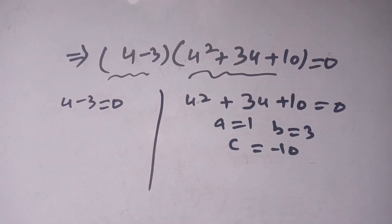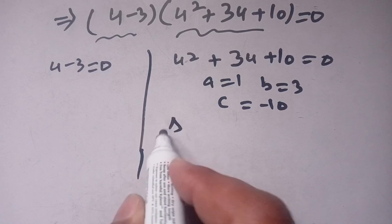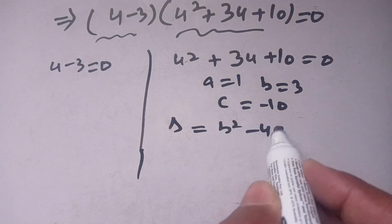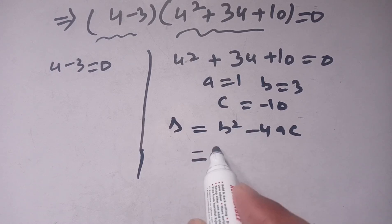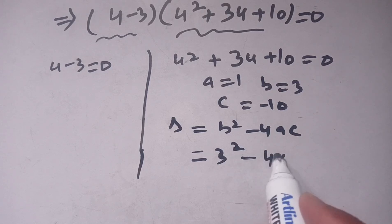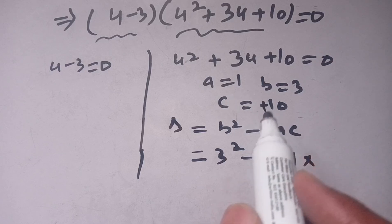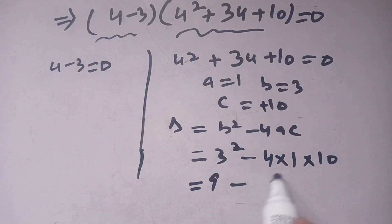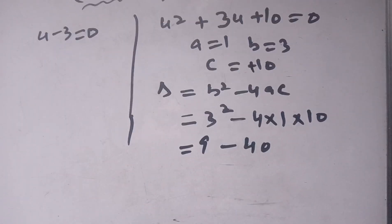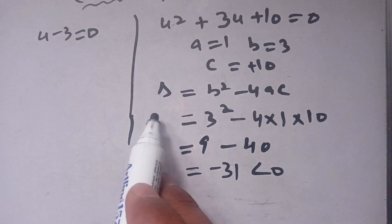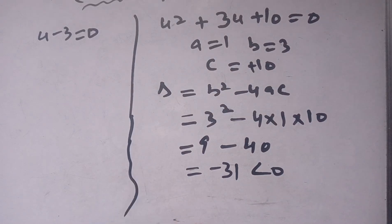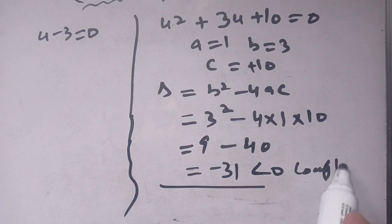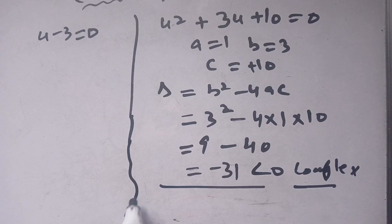We find the discriminant: b squared minus 4ac equals 3 squared minus 4 times 1 times 10, which is 9 minus 40, equal to minus 31. Since the discriminant is negative, there are no real roots — only complex (imaginary) roots — so we reject this case.